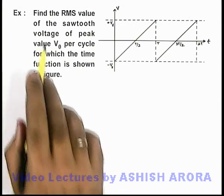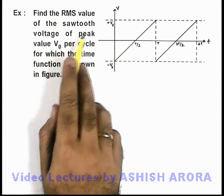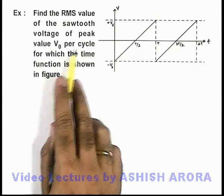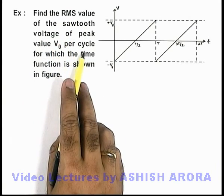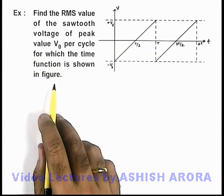In this example, we are required to find the RMS value of the sawtooth voltage with peak value V₀ per cycle, for which the time function is shown in the figure.